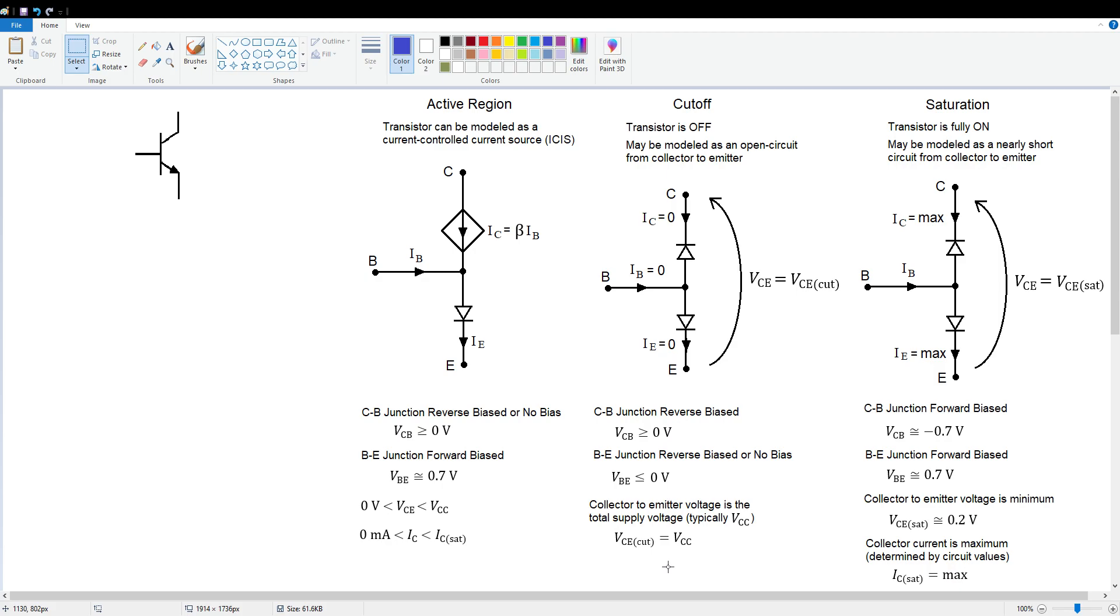The other extreme is saturation. That's when the transistor is turned fully on, and it's carrying as much collector current as it possibly can. IC equals max. In this case, the collector-to-emitter voltage is going to be minimum. Ideally, that would be zero, but for a real transistor, it's a few tenths of a volt.